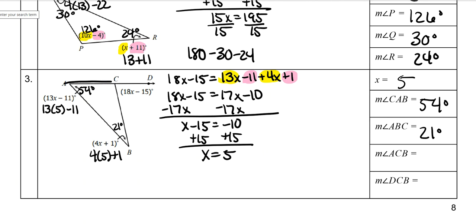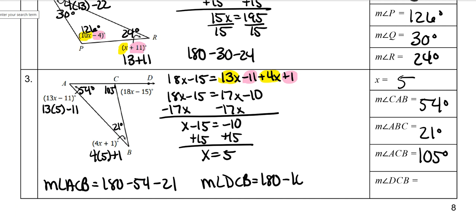ACB is ACB. So remember that this angle here, you just subtract from 180. So ACB is 180 minus 54 minus 21, which is 105. And then you can, because both of these are a linear pair, you can subtract it from 180. So the measure of angle DCB is 180 minus 105, and that's 75 degrees.